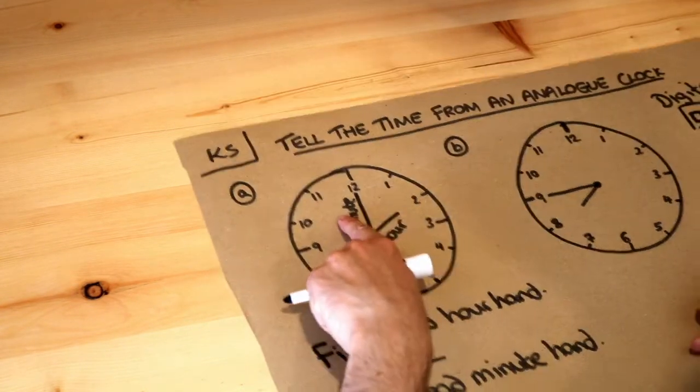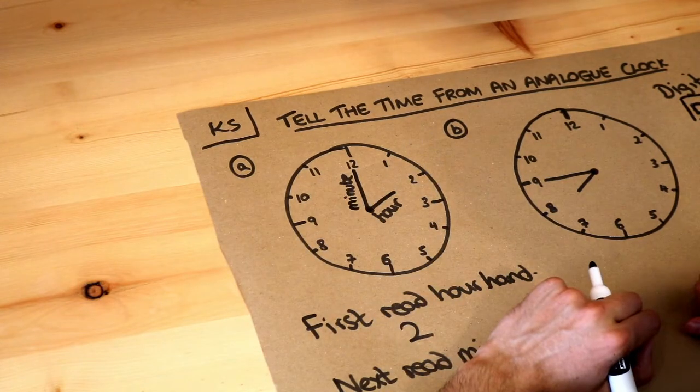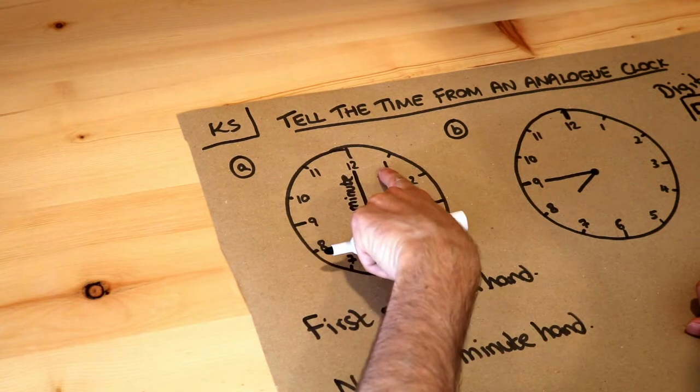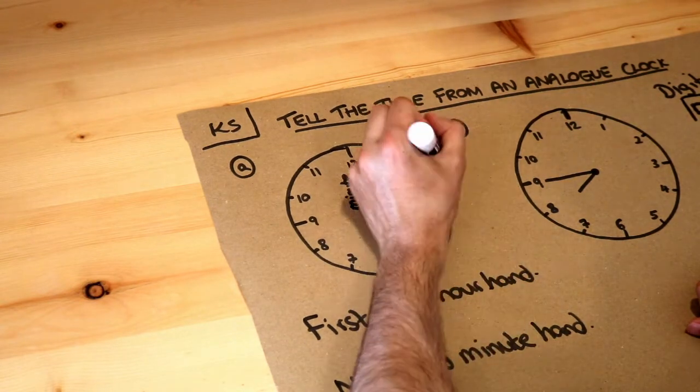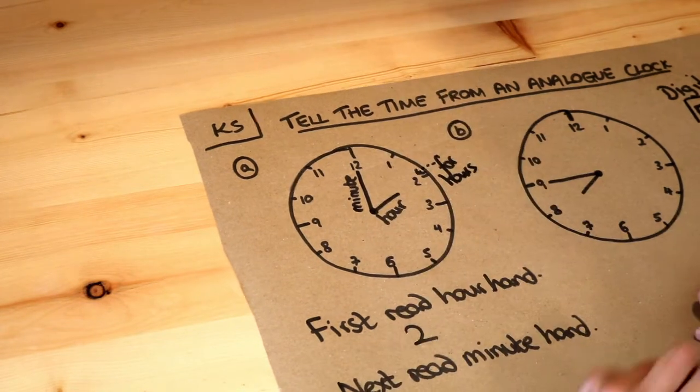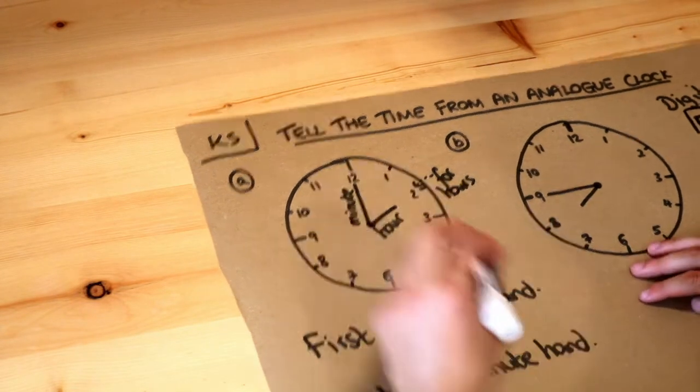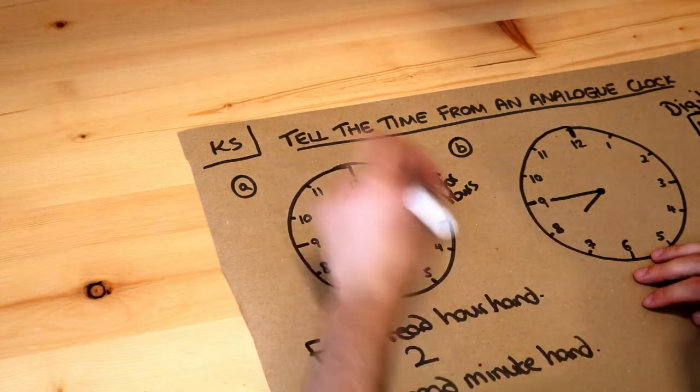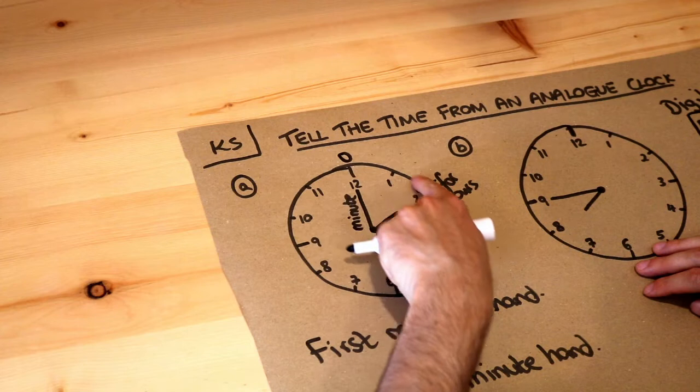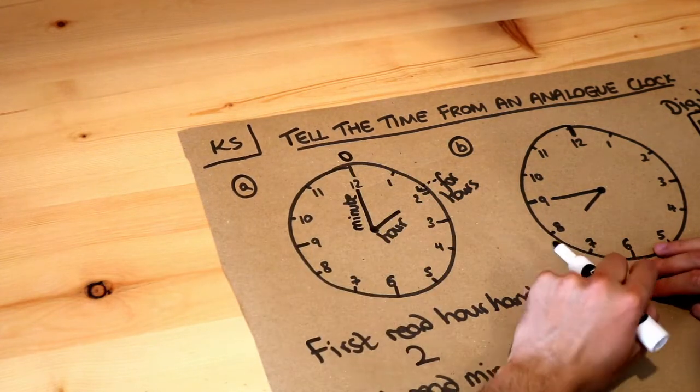Now you might think the minute hand is pointing at 12, so the minutes is 12. But with the minutes it works a bit differently. These numbers here are for the hours only, they're not for the minutes. The way the minutes work is this: at the top of the clock it's 0 minutes, and then we work our way round going up in 5s.